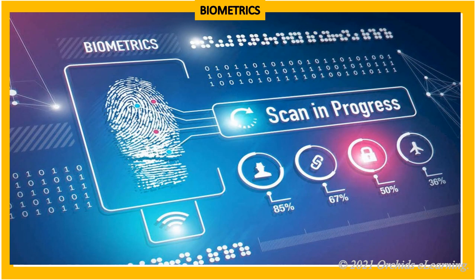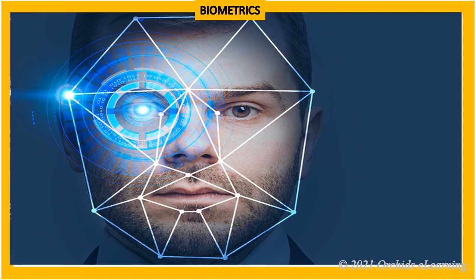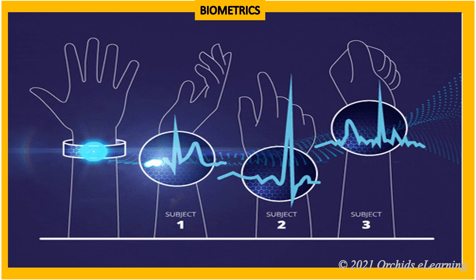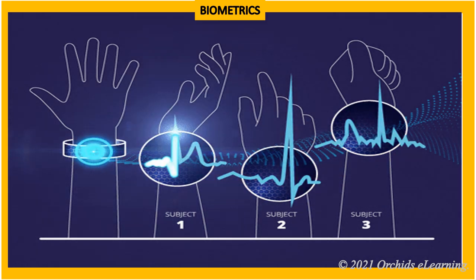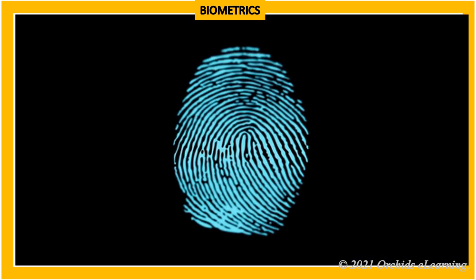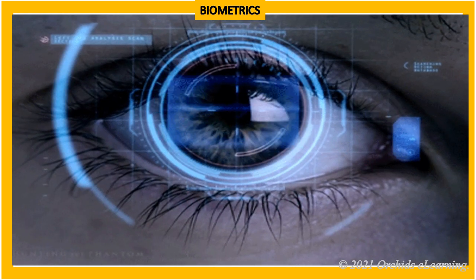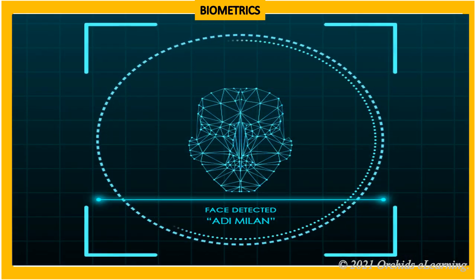Biometrics: Biometrics is a technology that measures and analyzes features of a human body for the purpose of identification. Biometrics are used in place of passwords. Using biometrics ensures that body parts cannot be lost, forgotten, or stolen, making it more advantageous than a system of passwords and keys. Examples of biometrics include fingerprints, eye recognition, face recognition, and voice recognition.